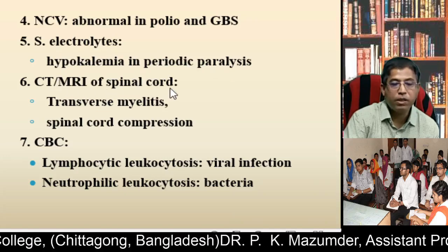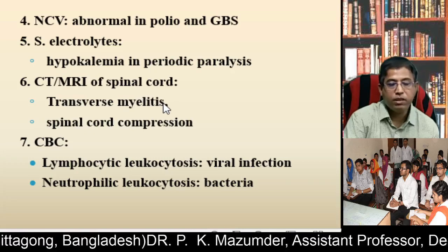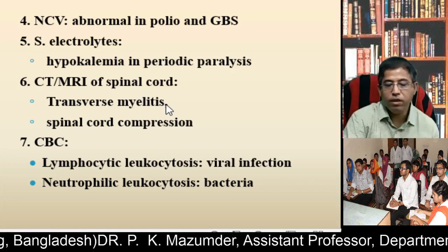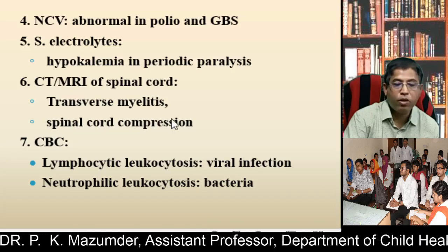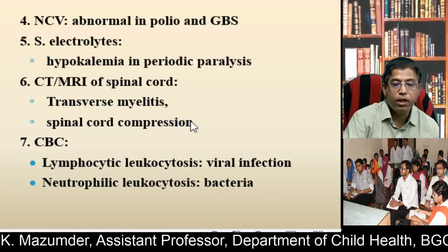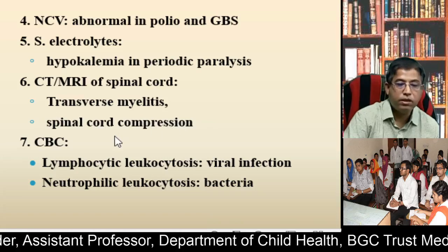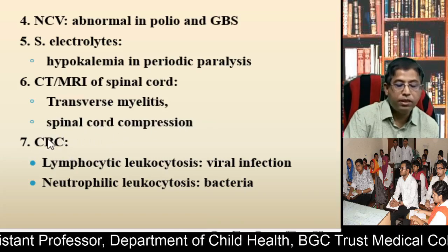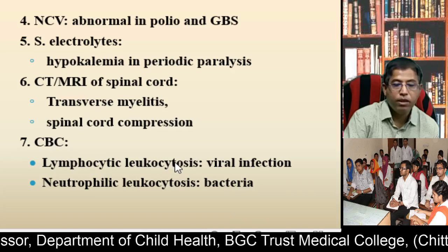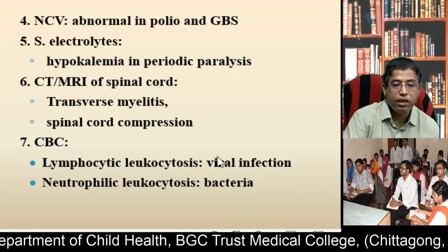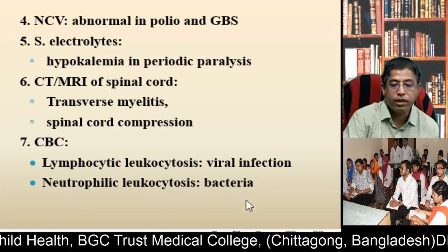If you do CT or MRI of the spinal cord, you may find transverse myelitis — a deformity of the spinal cord — and spinal cord compression, which may be due to tumor, trauma, or tuberculosis. If you do a complete blood count, you may get lymphocytosis in viral infection and neutrophilia in bacterial infection.